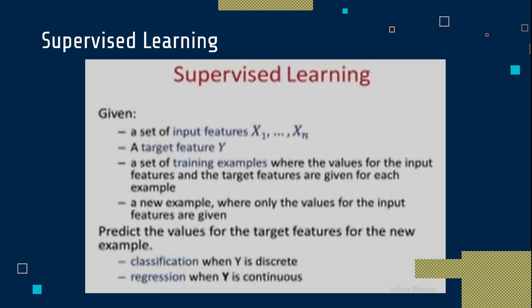We start with supervised learning. The supervised learning algorithm learns under some supervision, meaning there is already labeled data. On the basis of that labeled data, your algorithm takes some decision — it understands the data and gives some prediction or output. That is your model training.